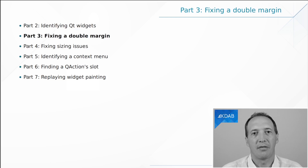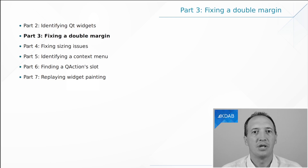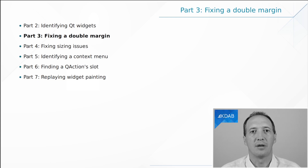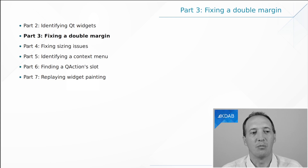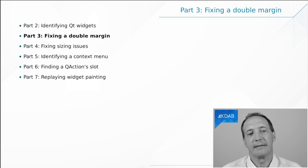Then in part three we will have a look at fixing double margins, which is something that happens when visually you see widgets that are not properly aligned, maybe because one of them has margin inside and then the widgets inside are not properly aligned. We'll see what it looks like in part three and how to debug that.